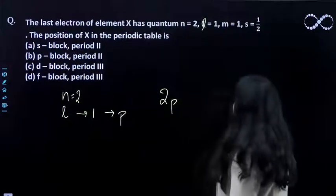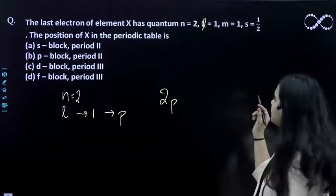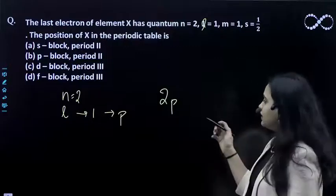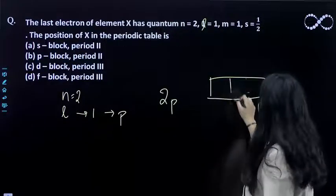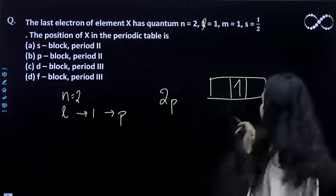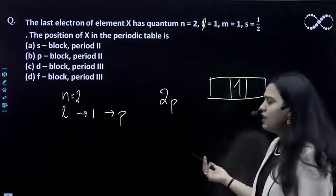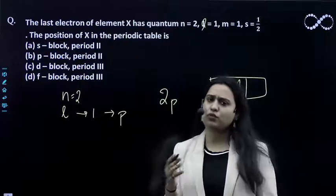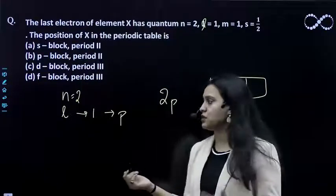m equals 1 means the atom's electron is in this orbital. Then s equals half - it is generally given as half, which can be plus half or minus half.